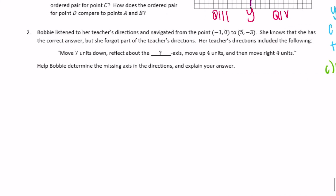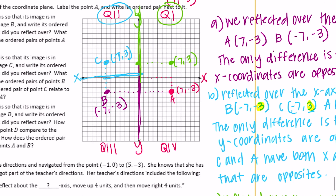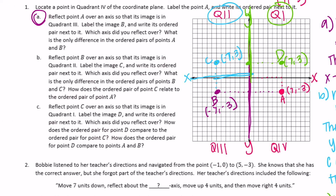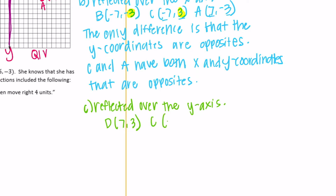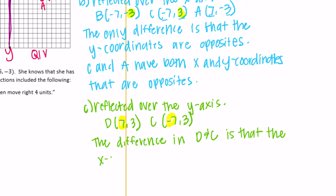Let's go back and label that point D. Which axis did we reflect over? The y-axis. How does the ordered pair for point D compare to C? D is (7, 3) and C is (-7, 3). The y-coordinates are the same, but the x-coordinates are opposites.